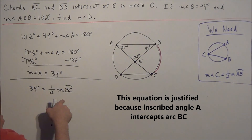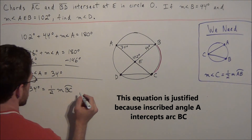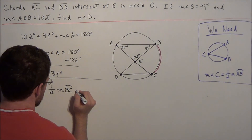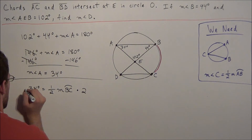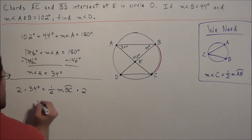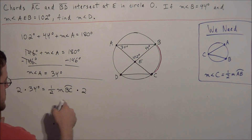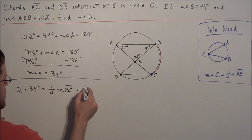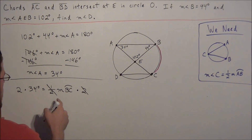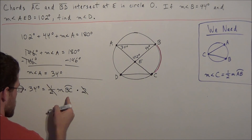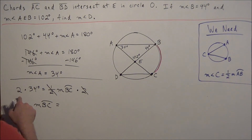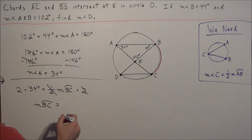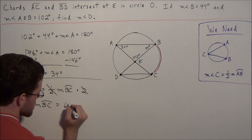To solve for arc BC, we multiply both sides of the equation by two. Two times one half equals one, so those terms cancel, and we get the measure of arc BC equals two times 34 degrees, which is 68 degrees.